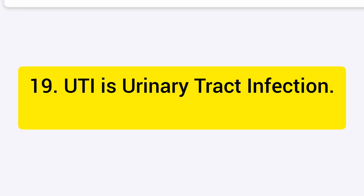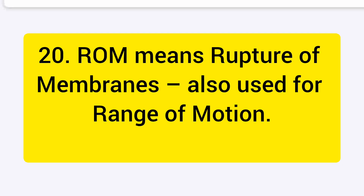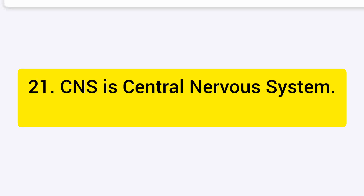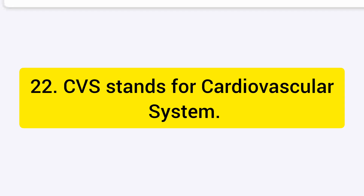UTI is urinary tract infection. ROM means rupture of membranes, and also used for range of motion. CNS is central nervous system. CVS stands for cardiovascular system.